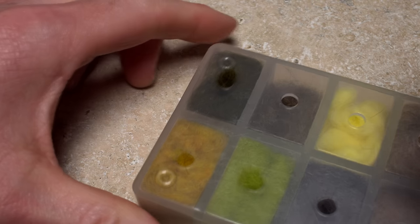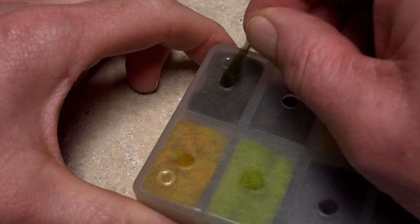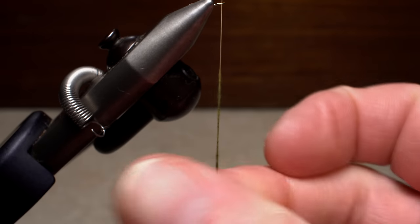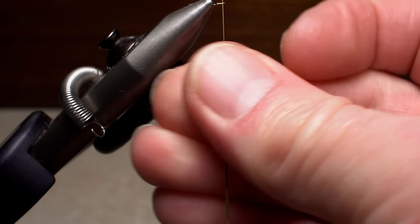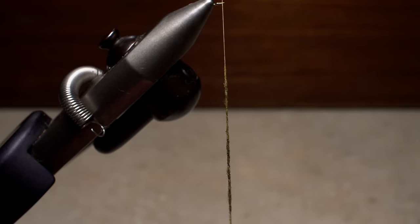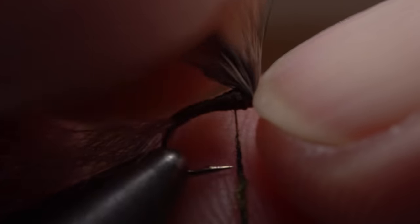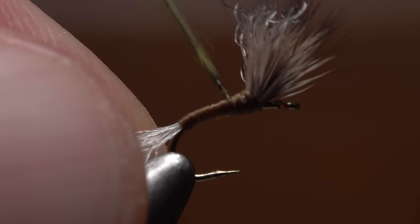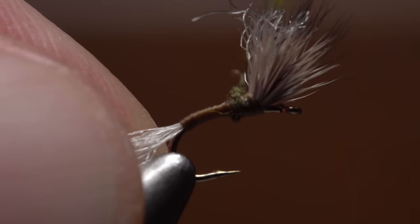For the abdomen, he pulls a small amount of dark olive Australian possum dubbing free from the dispenser and produces a fairly short, super thin dubbing noodle on his tying thread. Pulling the wing up and back, use the thumbnail of your right hand to crease the deer hair at its base. With the wing standing up, take wraps with a dubbing noodle first behind then in front to support the wing. Ideally, you should end with bare tying thread right at the back edge of the hook eye.